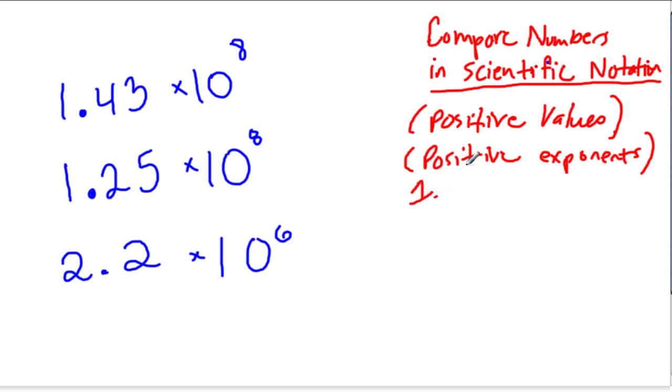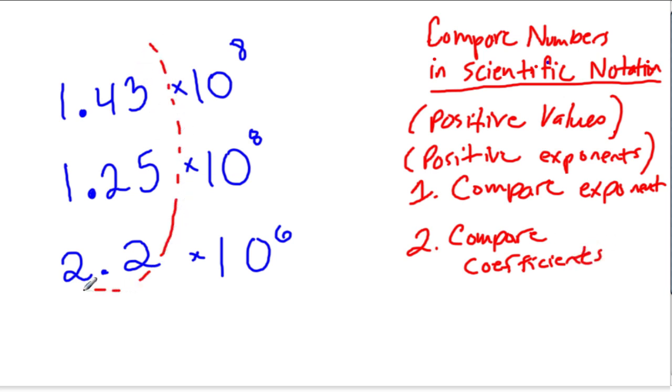We do two things. First, compare the exponents. If an exponent is larger, then the number is larger. The second part is to compare coefficients. These numbers here are the coefficients. The larger the coefficient, the bigger the number.